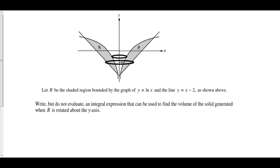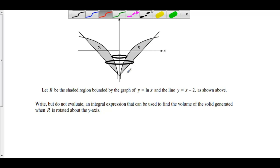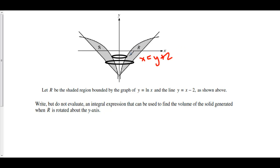Because our radius has to be in terms of y, we should write our functions as functions of y. This line was y equals x minus 2, but solving for x gives x equals y plus 2. Furthermore, y equals the natural log of x — raising both sides to the power of e gives x equals e to the y. So now we've written our functions in terms of y.